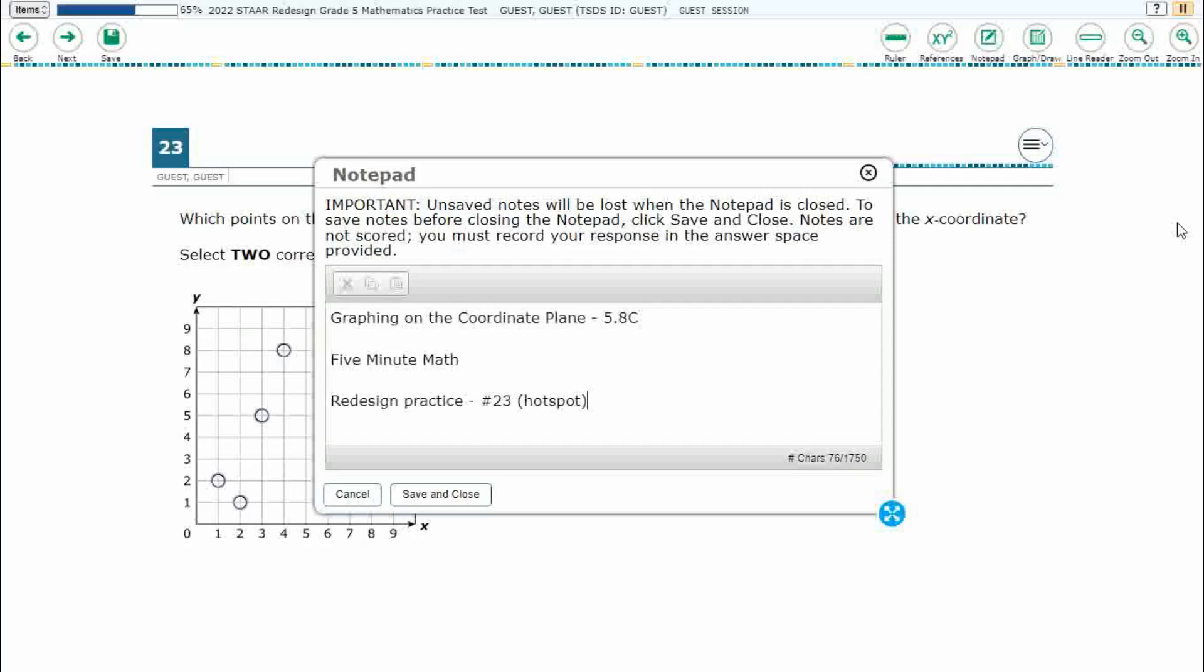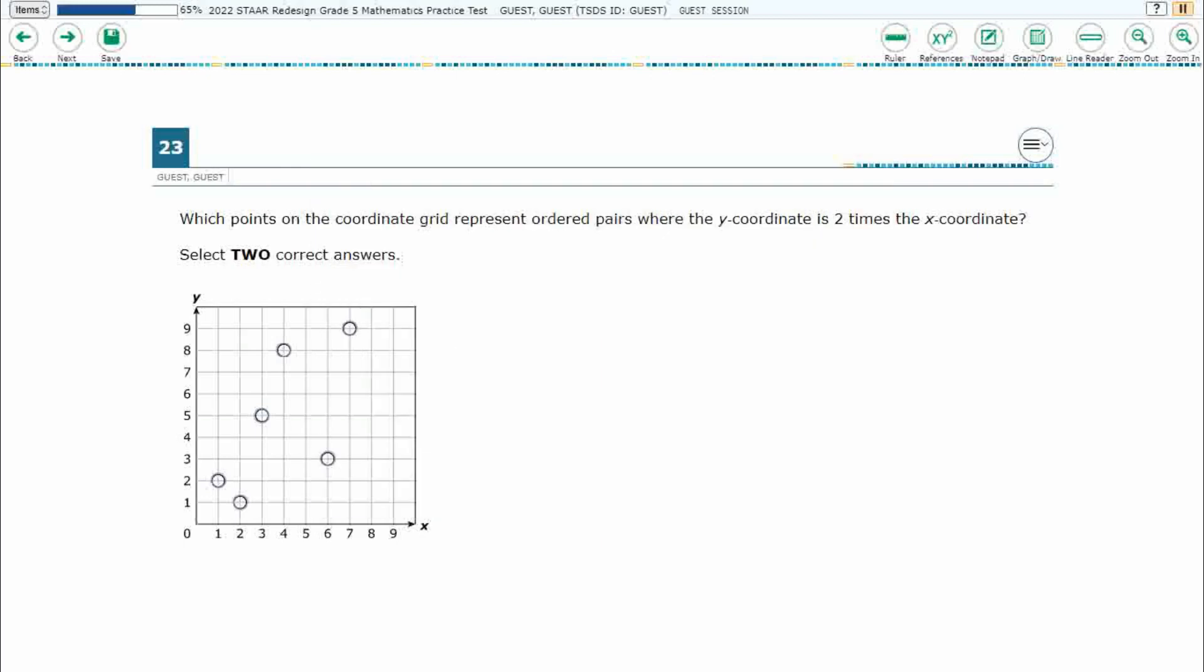This is standard 5.8c in the great state of Texas and we are using item number 23 which is a new item type called hotspot off the redesigned practice online STAR test.